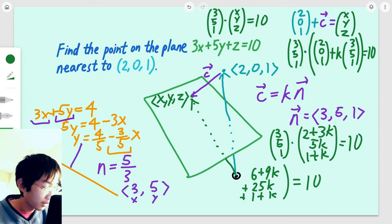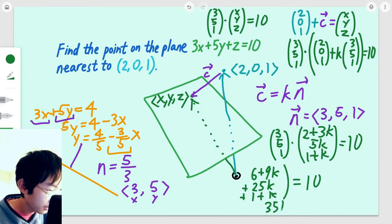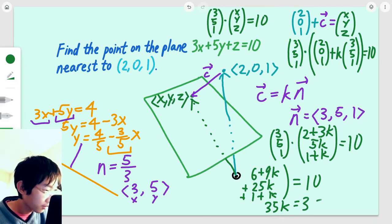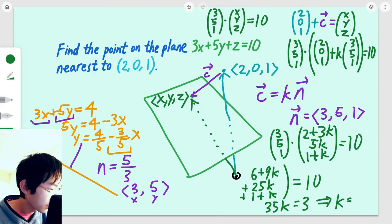When we isolate k on one side, we get 6 plus 1, that's 7. And 9k plus 25k plus k is 35k. So, 35k equals 10 minus 7, or 3. Therefore, k equals 3/35.